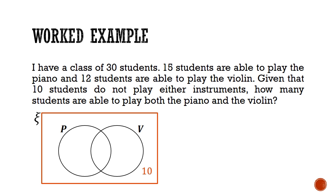If we let the number of students who play both instruments be x, then the number of students who play the piano only would be 15 minus x, and the number of students who play the violin only would be 12 minus x. By adding up the cardinality of the four regions, we should get 30, which is the total number of students. And by solving this equation, we get x equals to 7, and conclude that 7 students are able to play both the piano and the violin.